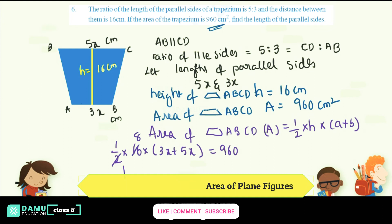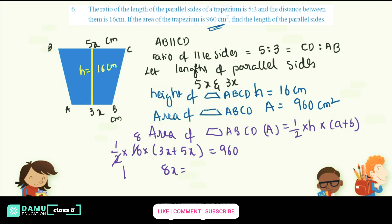So 3x plus 5x equals 8x. Shifting 8 to the other side: 960 divided by 8. So 960 divided by 8 equals 120. Therefore 8x equals 120.